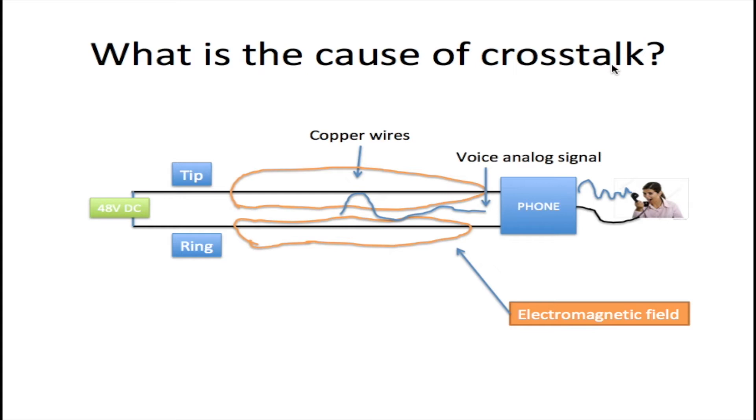What is the cause of crosstalk? Well, whenever you speak on a telephone, you speak into the mic. The mic converts your voice to an analog signal. If you're speaking loud, the amplitude of this signal is high. If you're speaking low, the amplitude reduces to a low level. So the amplitude of this signal all depends on your voice.